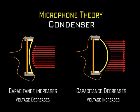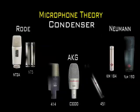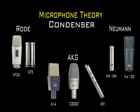A voltage is required across the capacitor for this to work. This voltage is supplied either by a battery in the mic or by external phantom power. Here are some of the most famous condenser mics. If you are careful with the sound pressure levels of the sources, the applications for these mics can include the whole of the audio spectrum.